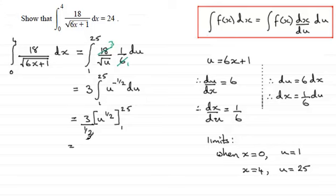So 3 divided by a half, well, that's 6. And then we've got, let's just change that to root u, 1 to 25. So if we substitute our values in, we've got 6 times the root of 25, which is 5, minus the root of 1, which is 1. So 5 minus 1 is 4, 6 fours are 24, and so this equals 24, which is what we had to show.